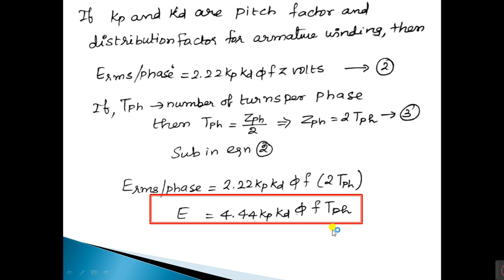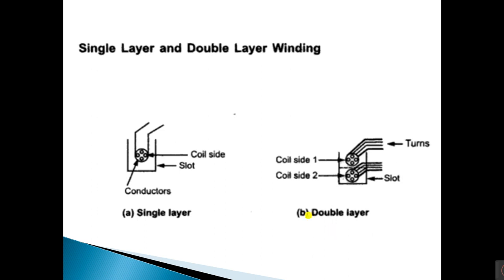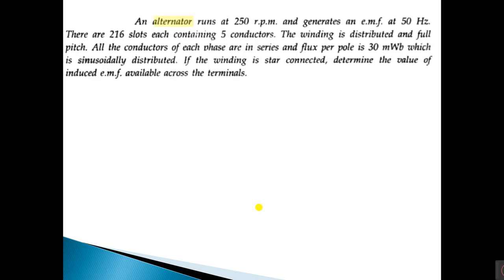You should also know the terms single layer and double layer winding. In single layer winding, a slot consists of only one coil side. In double layer winding, there are two coil sides per slot — one at the bottom and one at the top. Since a lot of space is wasted in single layer winding, double layer winding is generally preferred in practice.